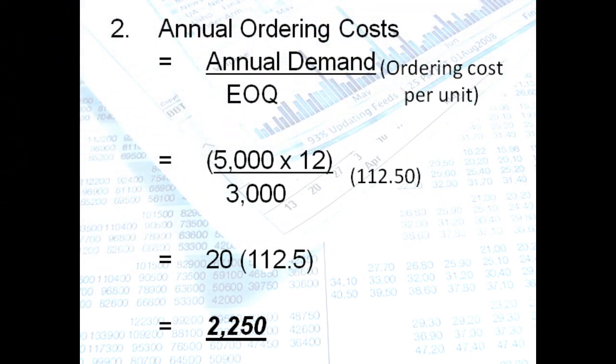Let's proceed with question number two. What is your annual ordering cost? The formula that we will use is annual demand divided by EOQ multiplied by ordering cost per unit. We substitute, our annual demand is 5,000 units, which is your monthly demand multiplied by 12 months. So you will arrive at 60,000 units in one year.